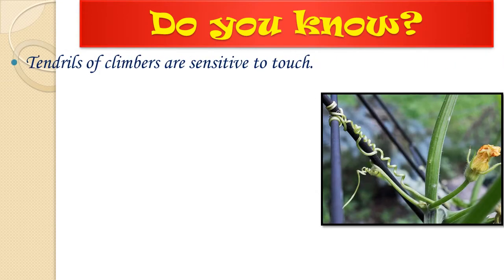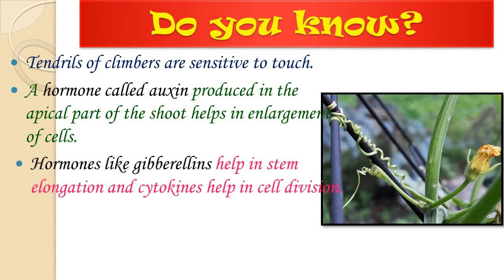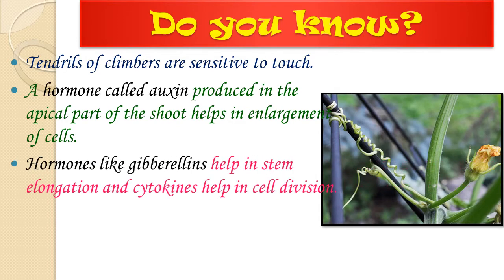Tendrils of climbers are sensitive to touch. A hormone called auxin, produced in the apical part of the shoot, helps in the enlargement of cells — the apical part meaning the top parts of the plant like a bud. Hormones like gibberellins help in stem elongation, and cytokinins help in cell division.